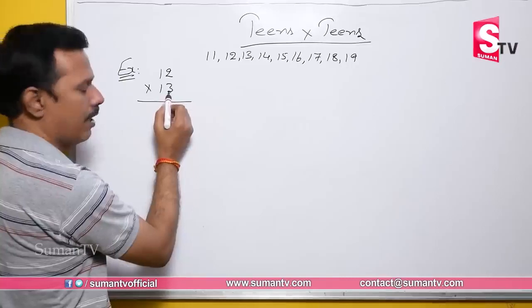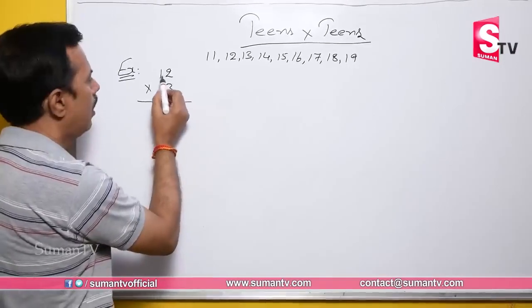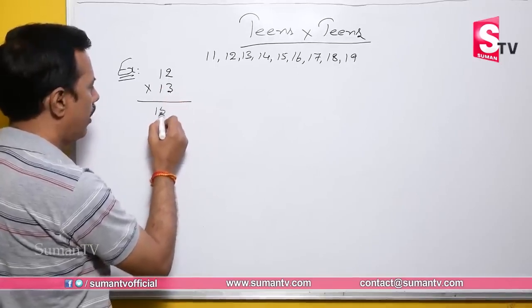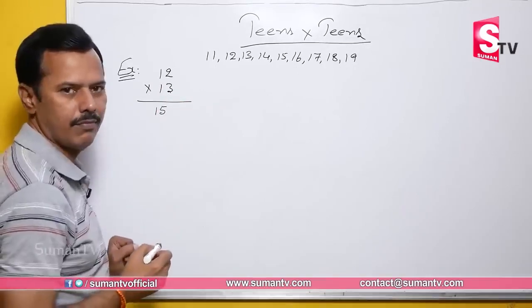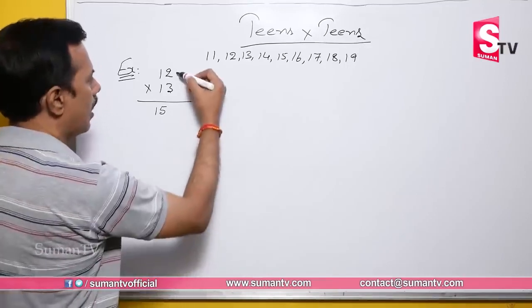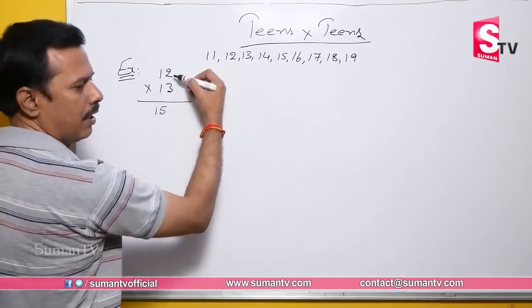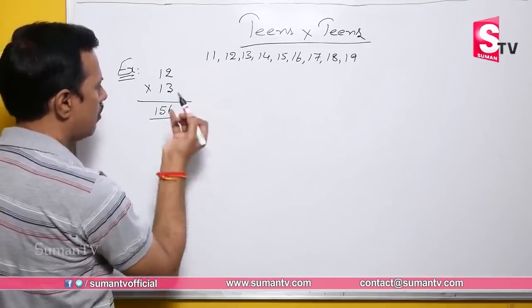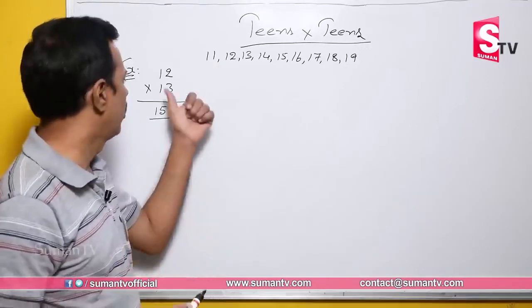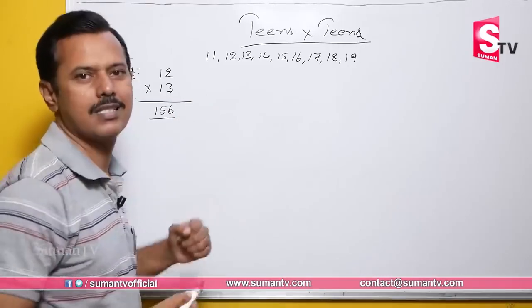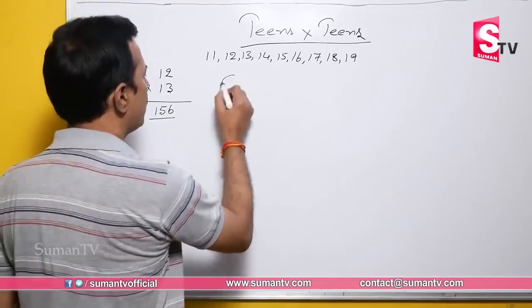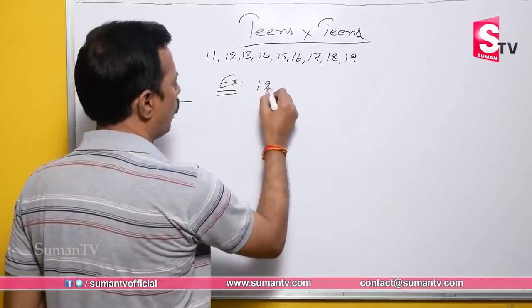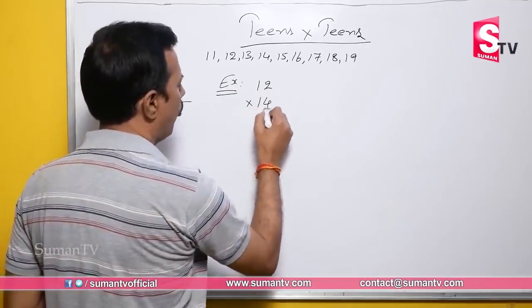12 plus 3 equals 15. Next, on the right side, we take the unit digits: 2 and 3. Multiply them: 2 × 3 = 6. So 12 into 13 is equal to 156.